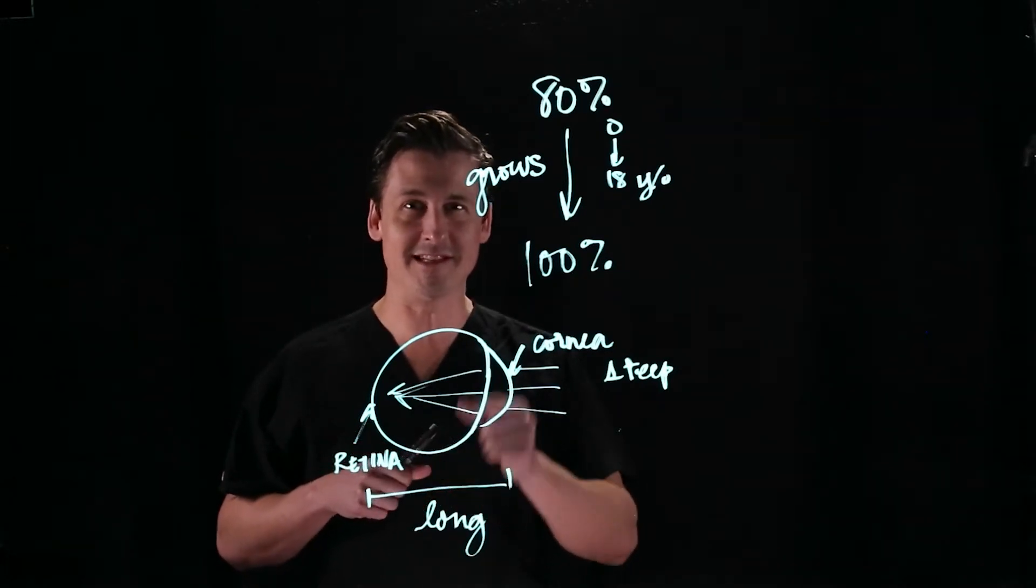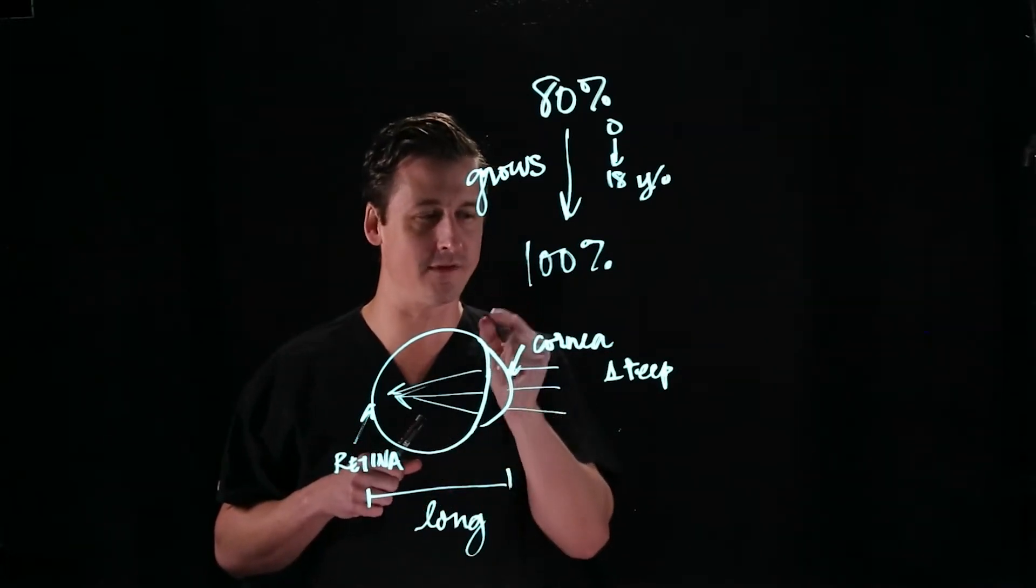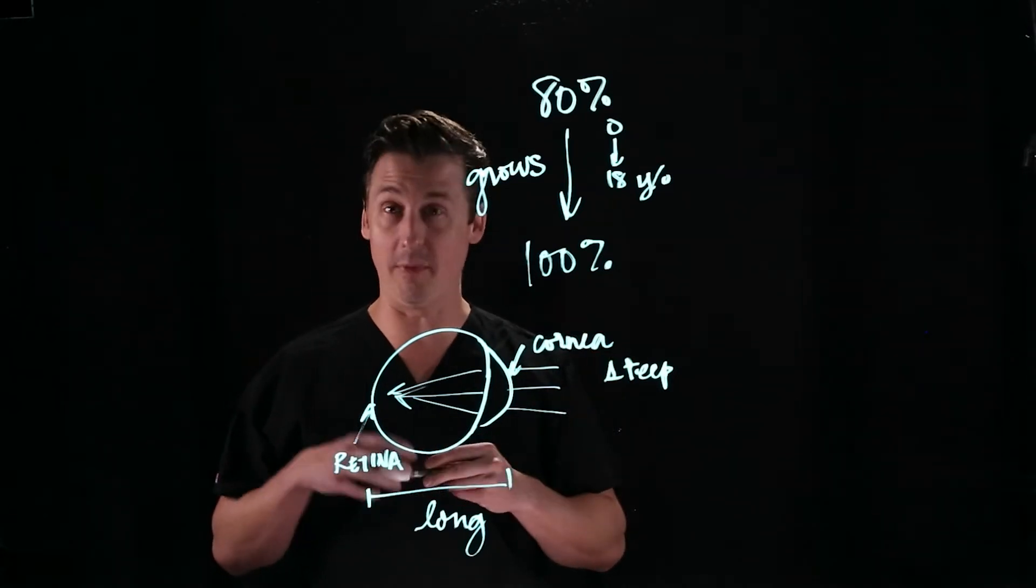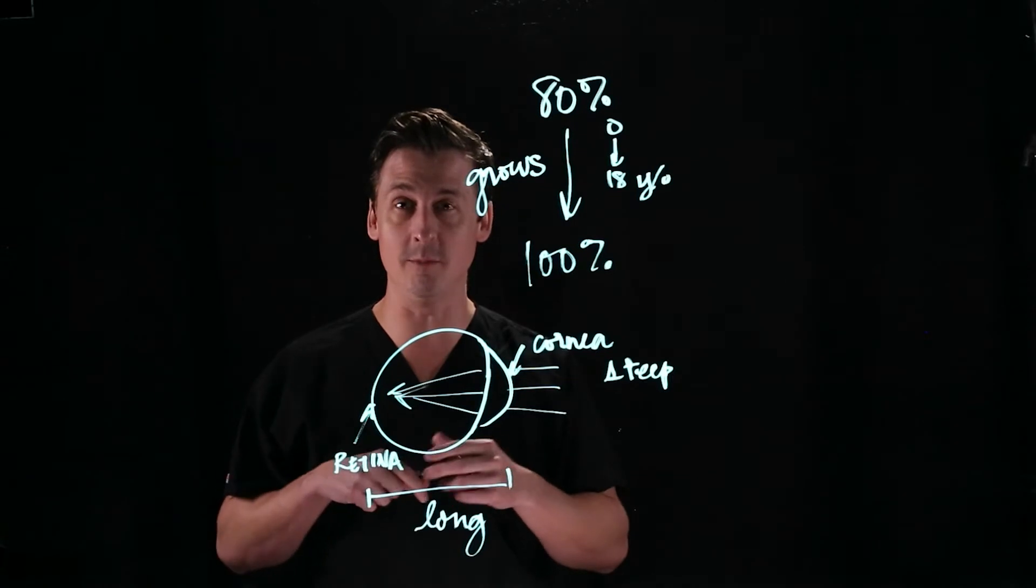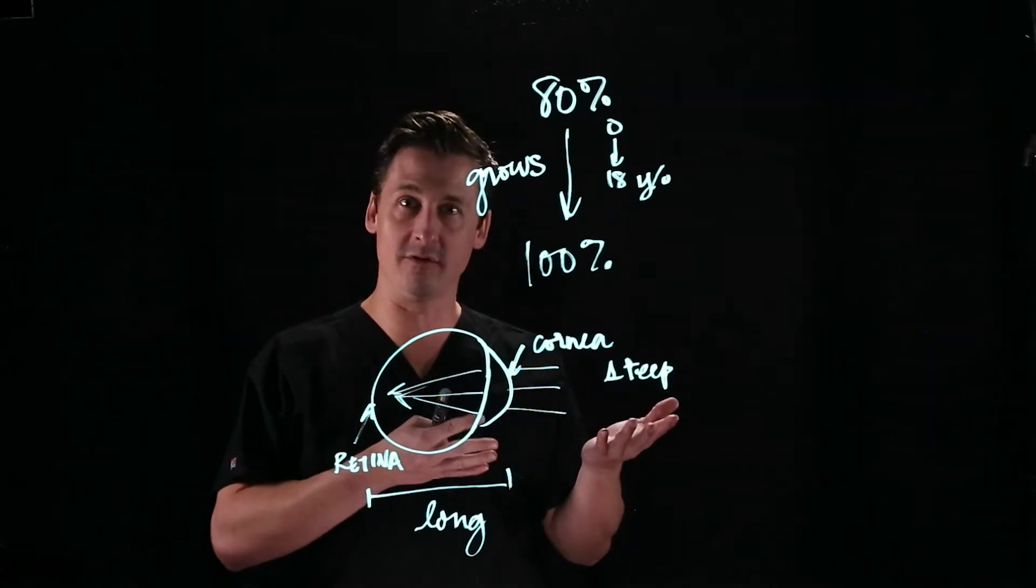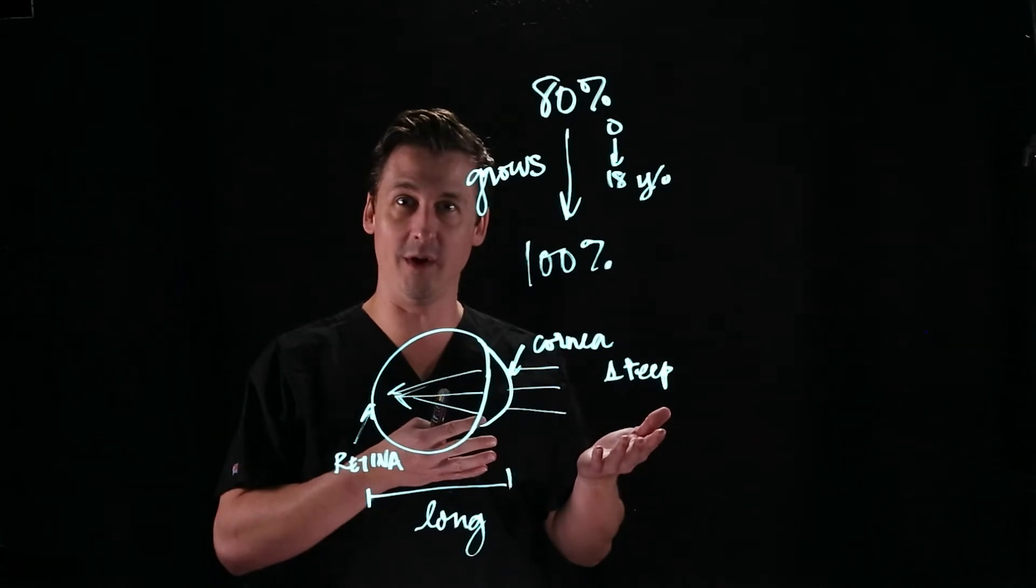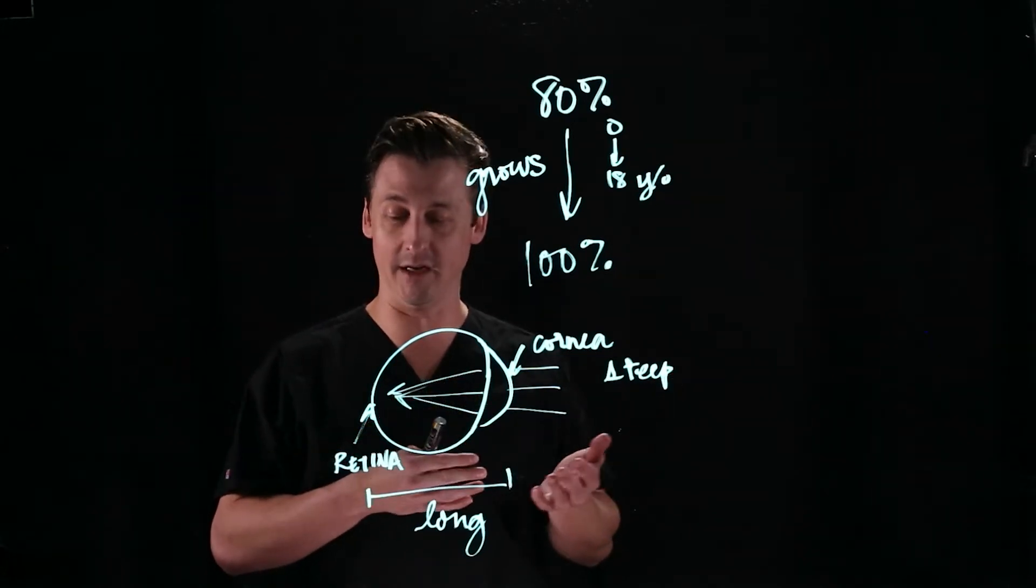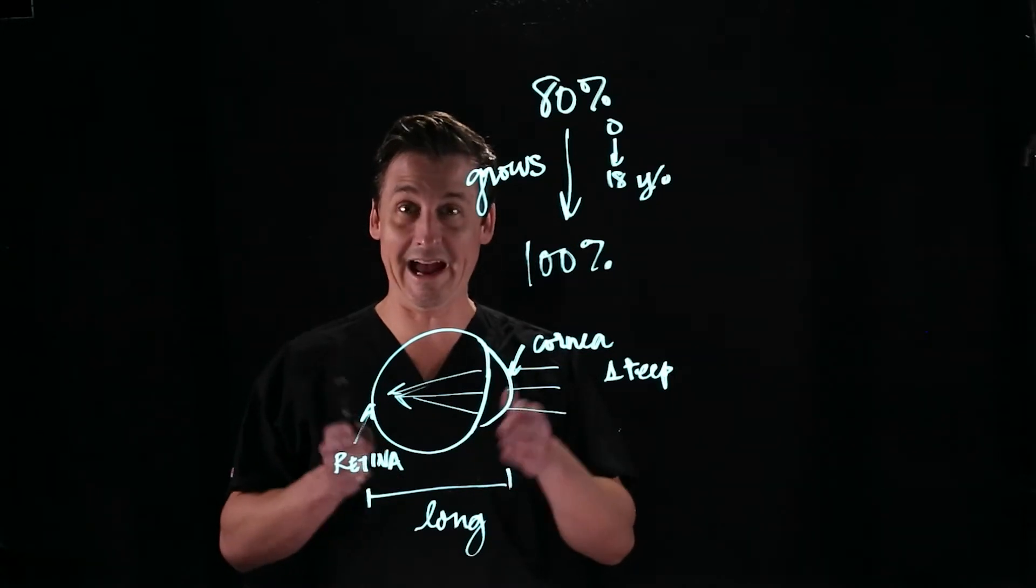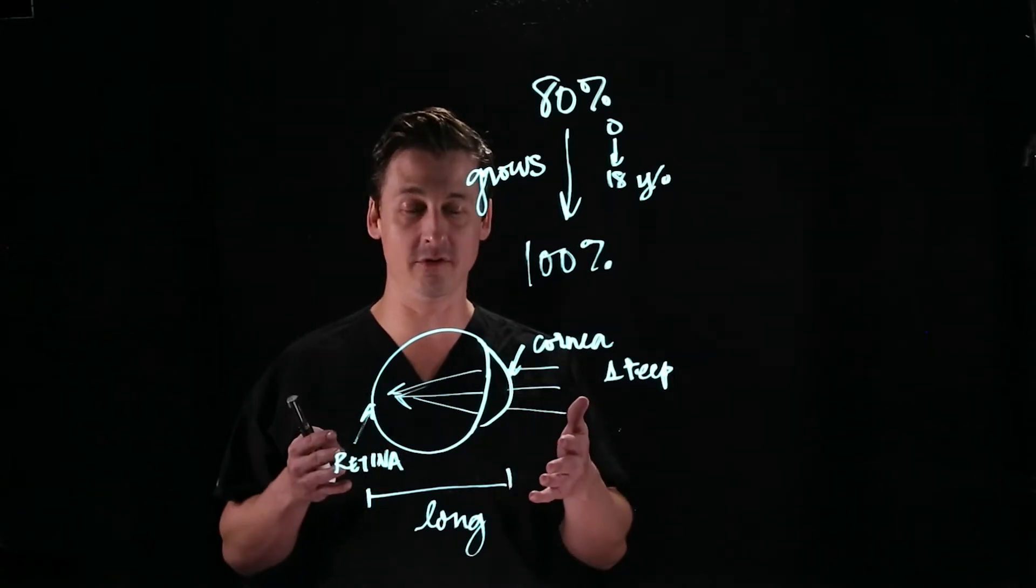And the interesting thing about this is how tiny, how tight the tolerances are for these things. So corneal steepness is measured in diopters just like your pair of glasses are. And it's for the same reason. You measure a lens in diopters. A diopter of difference on your cornea will either make you a diopter more or less nearsighted. One millimeter of length of your eye added will make you three diopters more nearsighted.